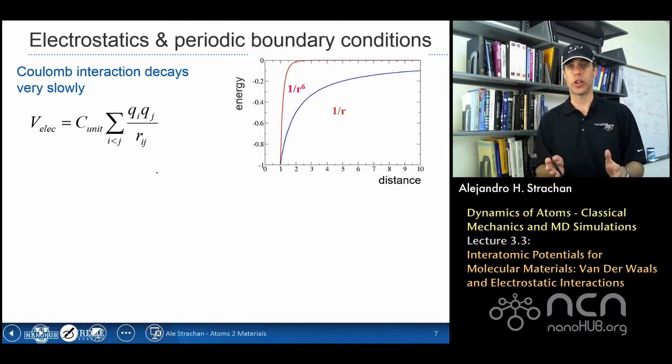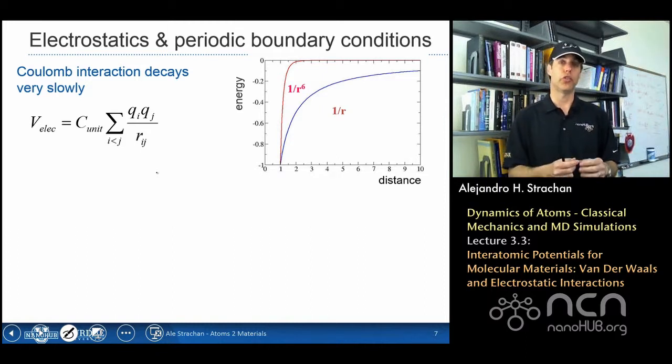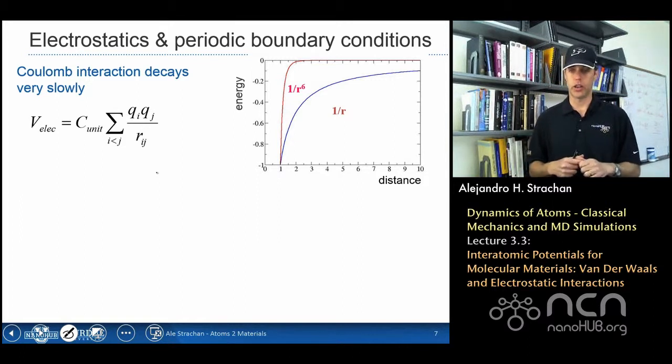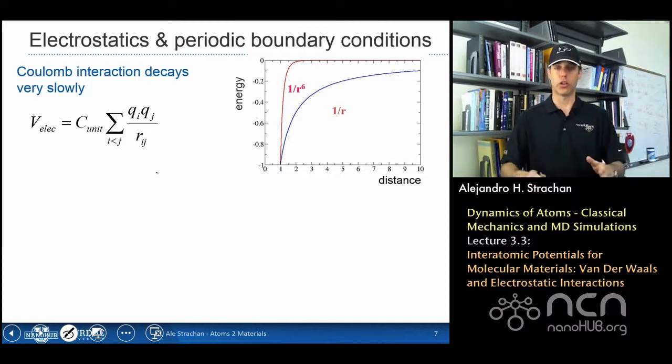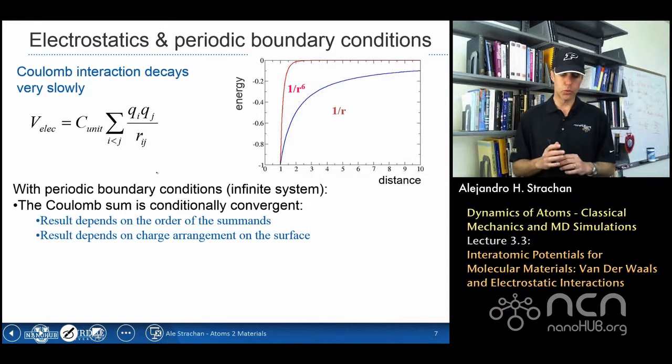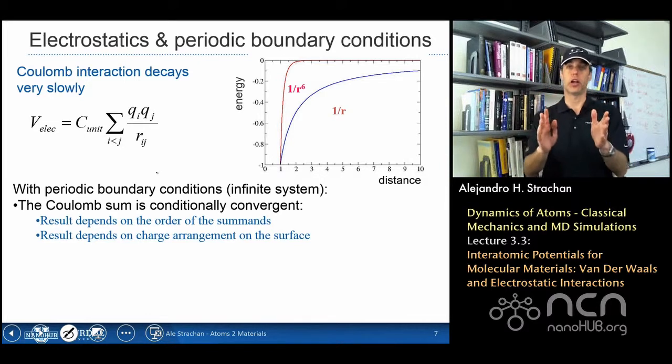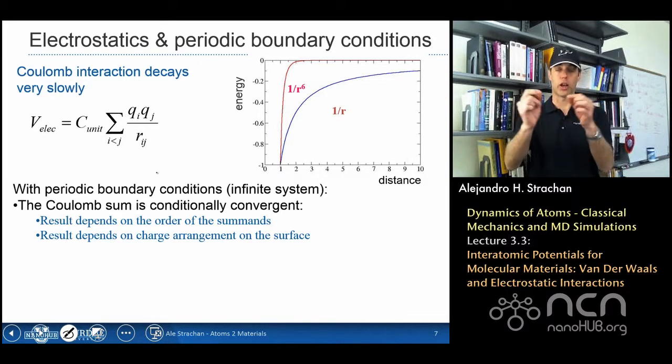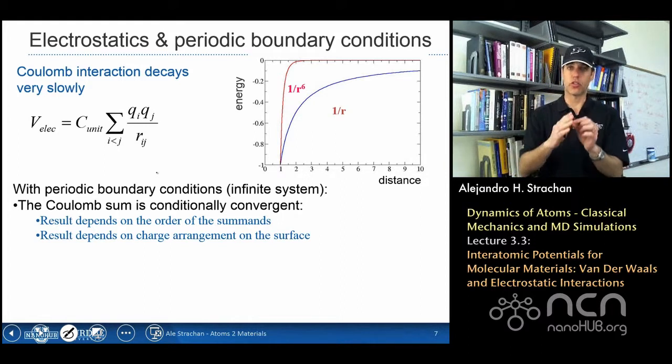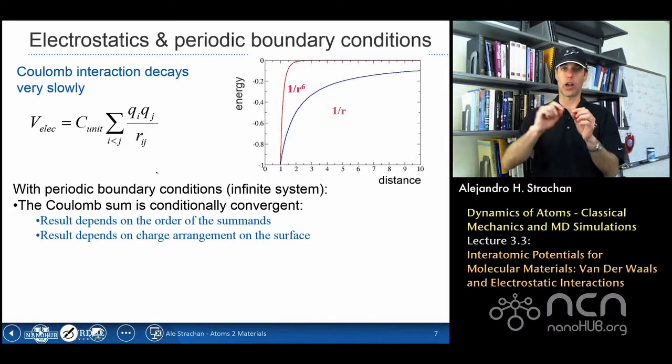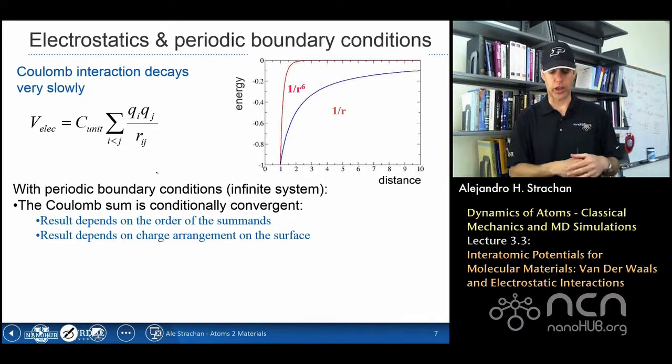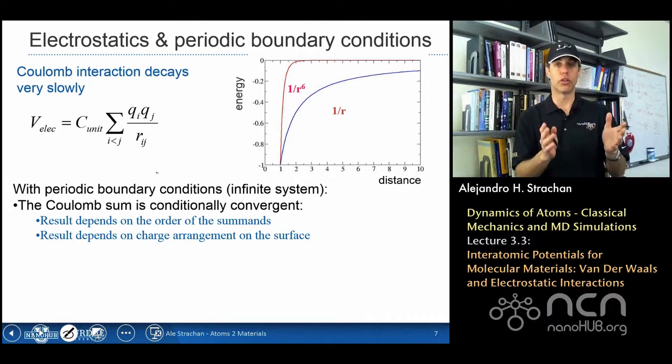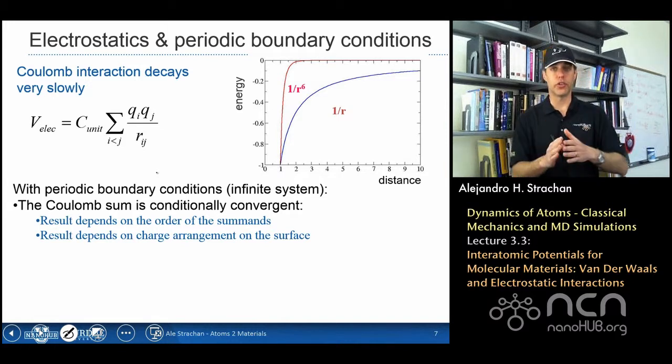And you can imagine that that is computationally very intensive because there's lots of neighbors to interact with, but there's a more fundamental problem when dealing with periodic boundary conditions and infinite systems. So what happens is the following, if I have a periodic system with charges that's overall neutral but I have partial charges, the infinite sum that results when I want to do the interactions of all the atoms with every single other atom, if you look at that sum from a mathematical point of view, the Coulomb sum is conditionally convergent.